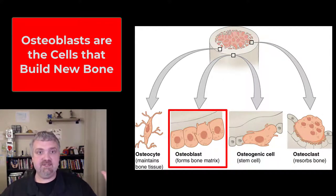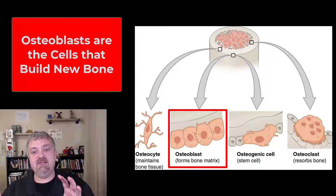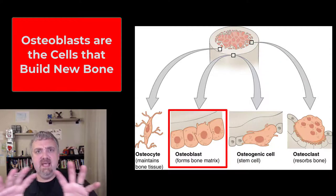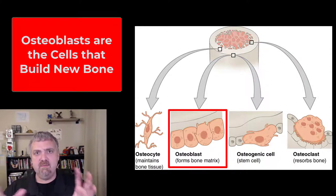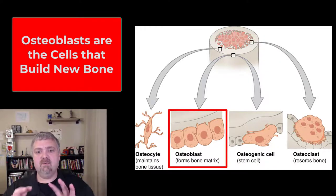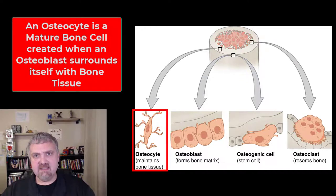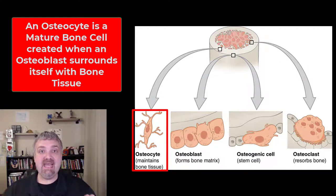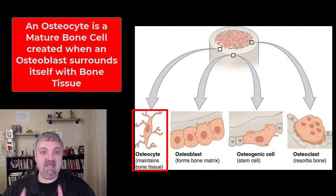Osteoblasts build bone. They take calcium from the environment and put it into your bone — remember that 'blasts' build bone. Once an osteoblast has basically encased itself in bone by adding all this mineral all around it, an osteoblast then becomes an osteocyte. That word means 'bone cell' — this is a mature bone cell that maintains the tissue.